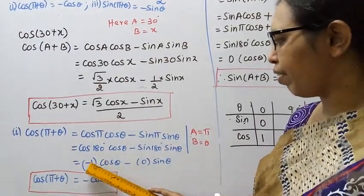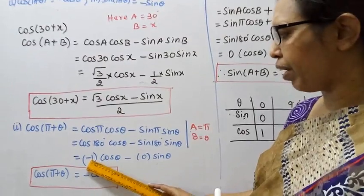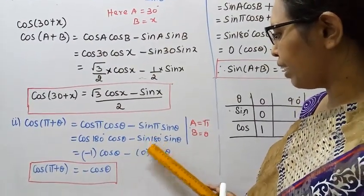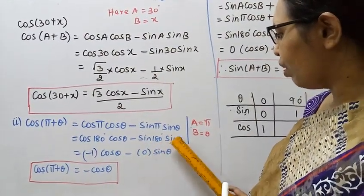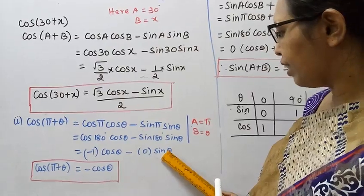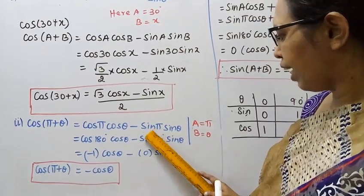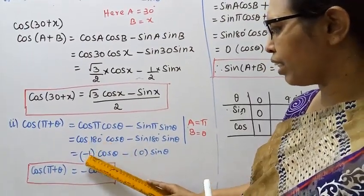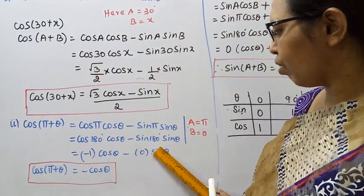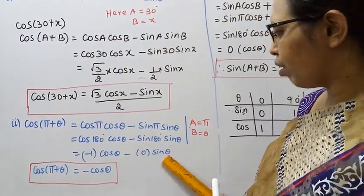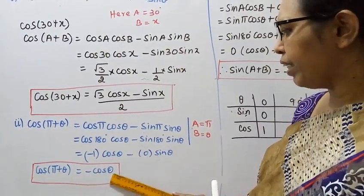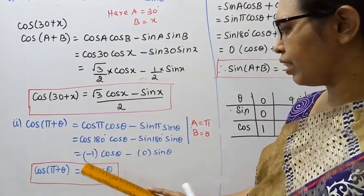cos 180° = -1, sin 180° = 0. So the expression becomes (-1) cos θ - (0) sin θ = -cos θ. Therefore cos(π + θ) = -cos θ. Proved.